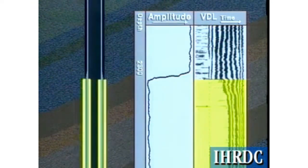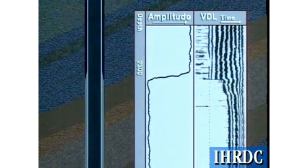In an interval with a very good bond, the pipe portion of the VDL does not show up, because the amplitude of the wavetrain is too low to expose the film. The formation signal, however, comes in strongly.